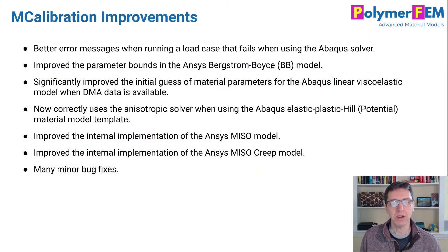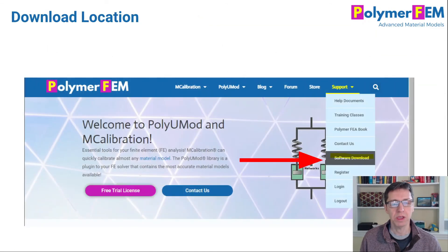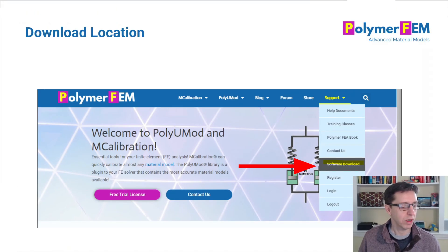There are a lot of other changes too, with many listed here — improvements, bug fixes, and little tweaks throughout. I really think you should download the latest version of both mCalibration and PolyUMOD. To get the software, click on the Support item in the menu bar, then click Software Download. Thanks for watching and let me know if you have any questions.